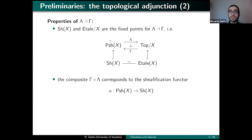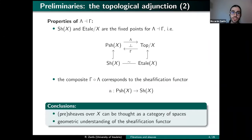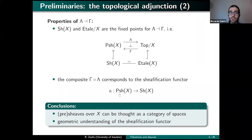So what we can think about these two properties of the adjunction is: first, sheaves over a space can be thought of as a category of spaces — they are étale spaces over X. Second, this description of the sheafification functor gives a geometric understanding of the process of building the associated sheaf: the sheafification of a pre-sheaf is the collection of local sections of a certain bundle over X. It's a very geometric and hands-on definition.